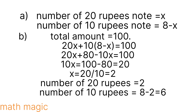Dividing: 10x by 10 gives x equals 2. So the number of 20 rupee notes is x equals 2. The number of 10 rupee notes is 8 minus x equals 8 minus 2 equals 6.